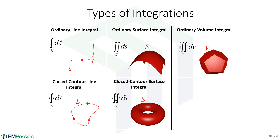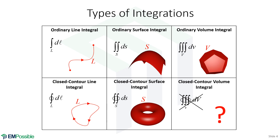We then have an ordinary volume integral, a triple integral where we're integrating something throughout some volume. If we just integrate differential volume, we get overall volume. Looking at the pattern, we might ask: is there such a thing as a closed contour volume integral? Since we only live in a three-dimensional world in electromagnetics, this would not make sense. In pure mathematics we could be in four, five, or more dimensions, and there would be such a thing as a closed contour volume integral — but restricted to three dimensions, it doesn't make sense.